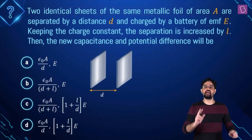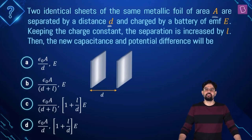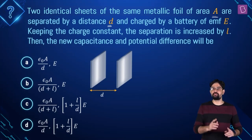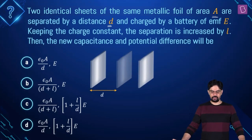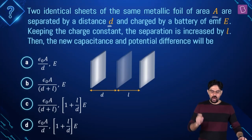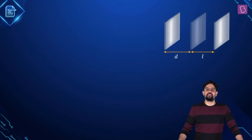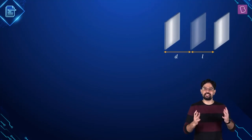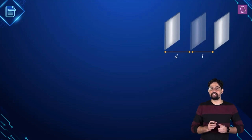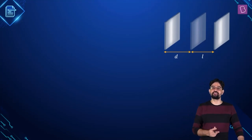In this problem, you have two identical metal sheets separated by distance D, both with area A, charged by a battery of EMF E. Given that the charge remains constant, the separation between the plates is increased by L, so the new separation becomes D plus L. The charge remains constant because the battery is removed after charging and an insulating handle is used to increase the separation.